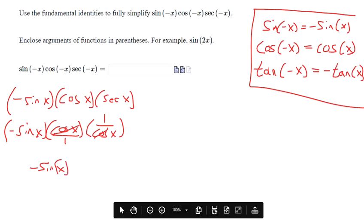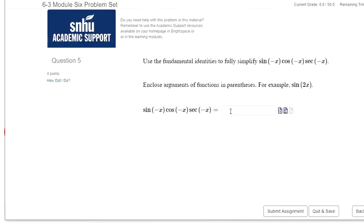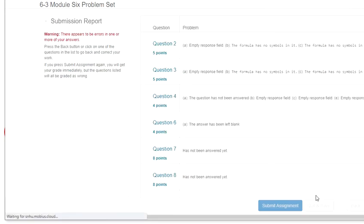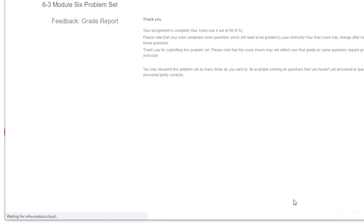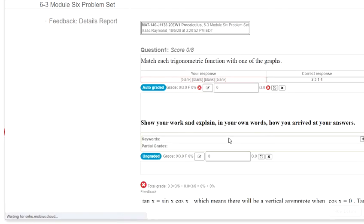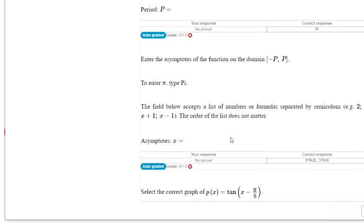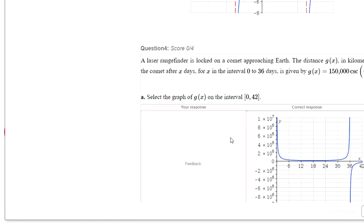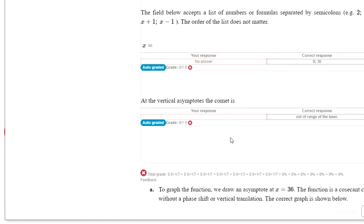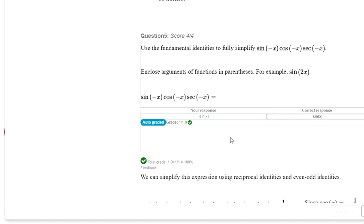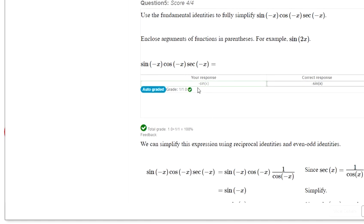So we're supposed to put parentheses according to Mobius. Let me try typing this up in Mobius to make sure everything works out right. Negative sine of x, let's see if it likes that. What question is this? Hopefully we'll know when we see a green arrow. Question four, question five. Okay, yep. So it liked the way I typed it.